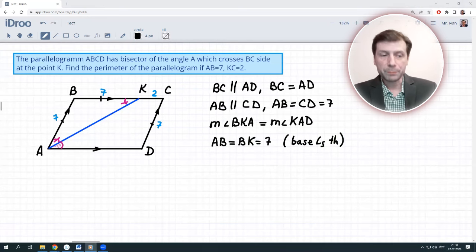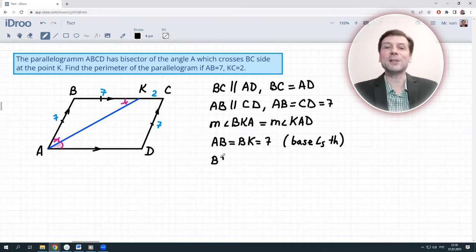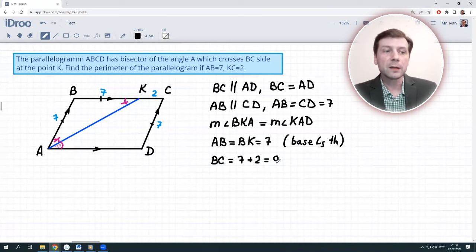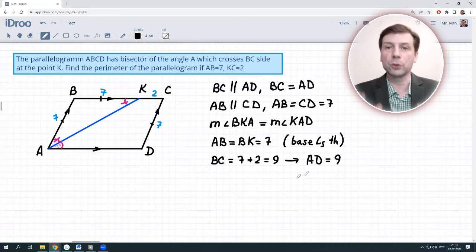Furthermore, now we know that BC equals 9. That's great because BC also equals AD, so AD equals 9. And as we said in the beginning, AB equals CD, which means CD is also 7. We now have all the sides known.